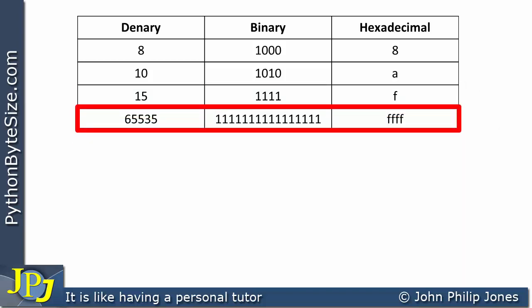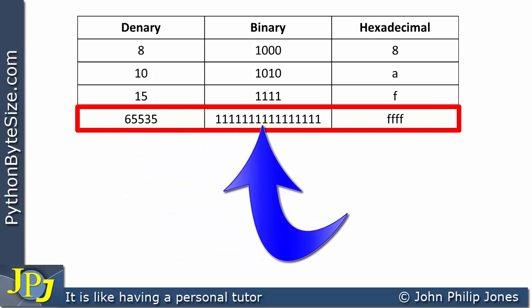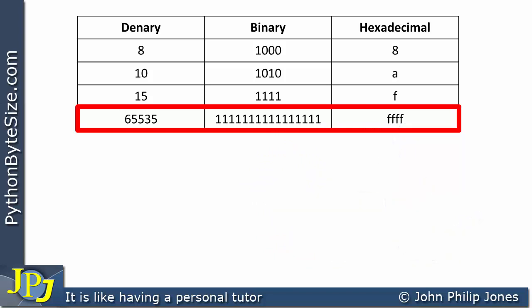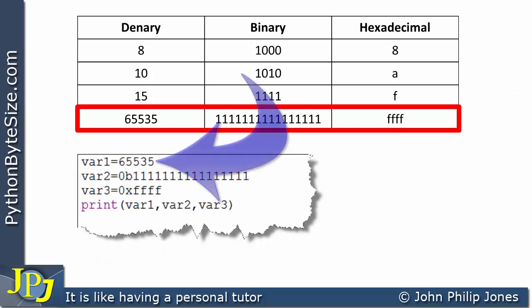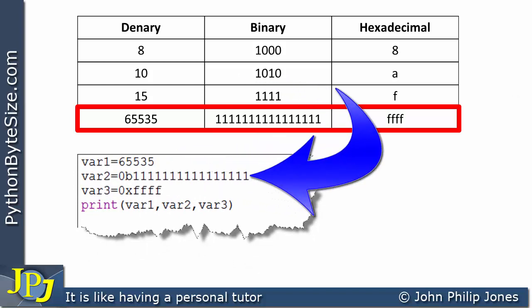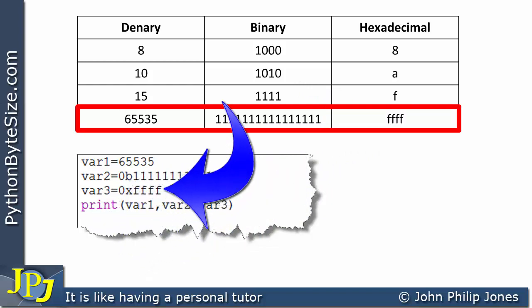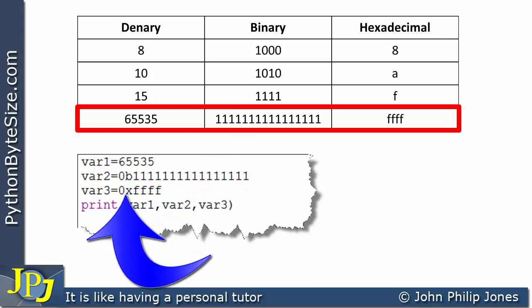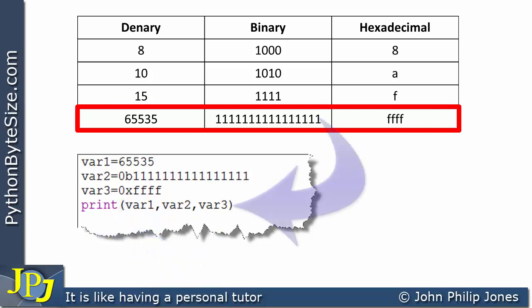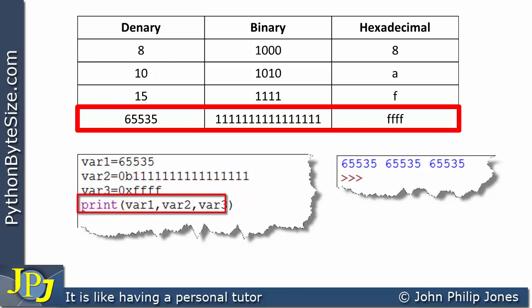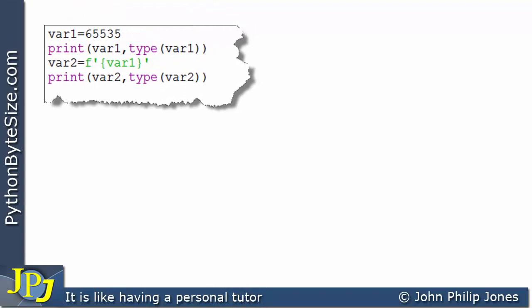Now consider 65,535: in binary it's a long string of ones, and in hexadecimal it's 0xffff. Assigning these to variables — var1 = 65535, var2 = 0b1111111111111111, var3 = 0xffff — and printing them all gives 65535 in each case, because Python outputs in denary regardless of how the number was assigned.